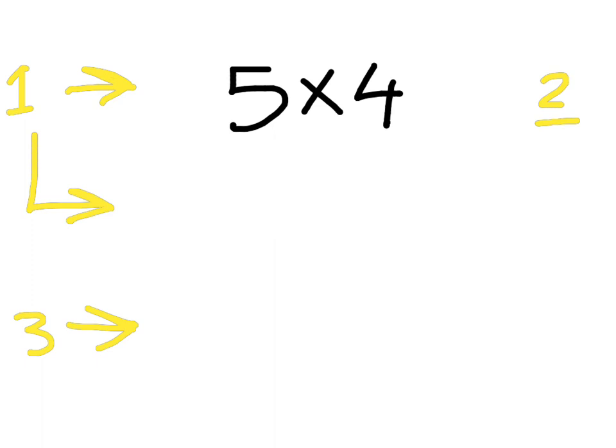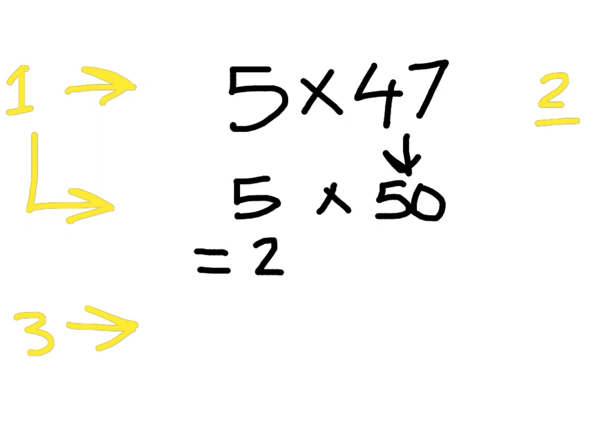Oops, I wrote that down wrong. It's not 5 times 40, it's 5 times 47. Press pause and do that now. Let's have a look. We should have turned the 47 into 50. And when we multiply by 5, we know that first we multiply by 10 and then we halve it. So 50 times 10 would be 500. Half of that would be 250.